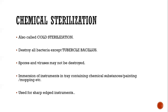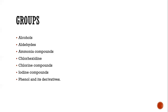Chemical means of sterilization is also known as cold sterilization. It destroys all bacteria except tubercle bacilli, but spores and viruses may not be destroyed. Instruments can be immersed in solutions containing these chemical substances, or used for painting the operated area and mopping. It is widely used for sterilization of sharp-edged instruments. Groups of chemicals include alcohols, aldehydes, ammonia compounds, chlorhexidine, chlorine compounds, iodine compounds, and phenol and its derivatives.